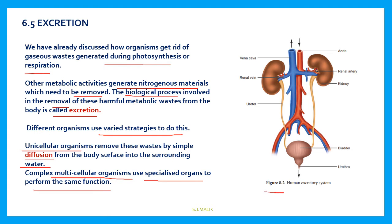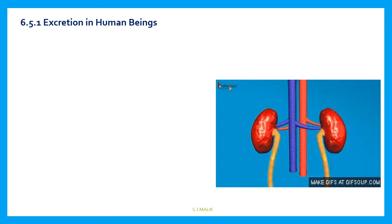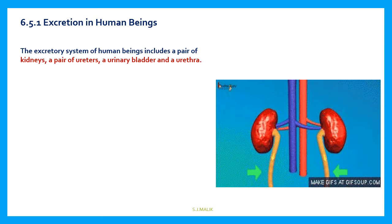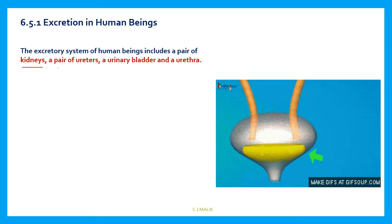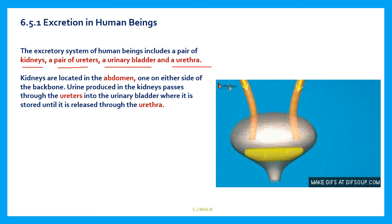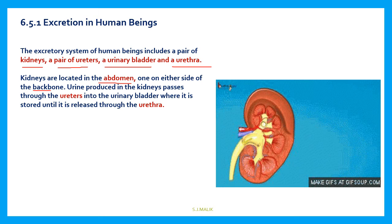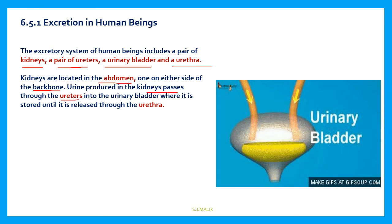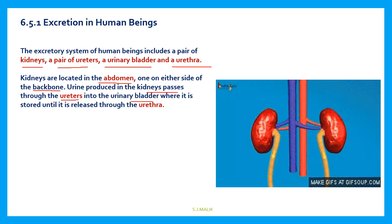Here you can see the diagram of the human excretory system. This is the ureter, this is the urinary bladder, and that is the urethra. The excretory system of human beings includes a pair of kidneys, a pair of ureters, a urinary bladder, and a urethra. Kidneys are located in the abdomen, one on either side of the backbone — one on the left side and one on the right side. Urine produced in the kidneys passes through the ureter into the urinary bladder, where it is stored until it is released through the urethra.